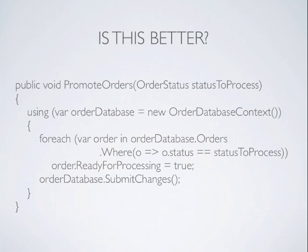But by simply changing the names, we can make it much more clearly express the intent. Now we're promoting orders — that sounds like a term someone in the business might use. We've moved to a strongly typed order status, so we don't need that unsightly defensive programming check. We're using the order database — everyone in the business knows which database has orders in it. We're looking at orders where the status equals the status to be processed, and setting those to ready for processing equals true. By simply changing the names, we express the intent of what's going on.